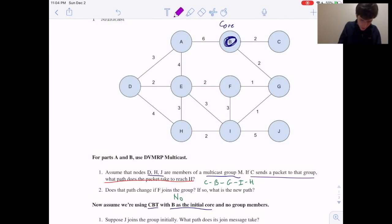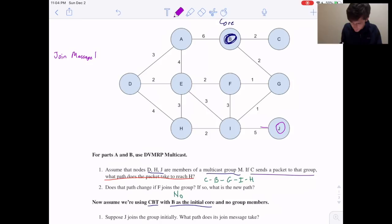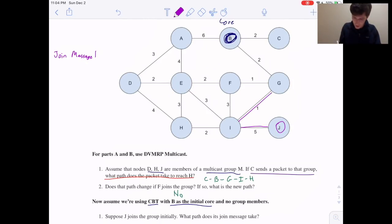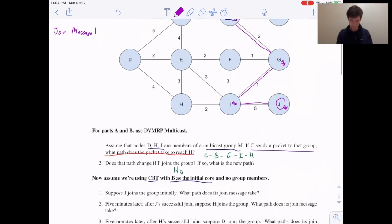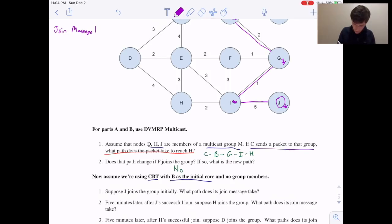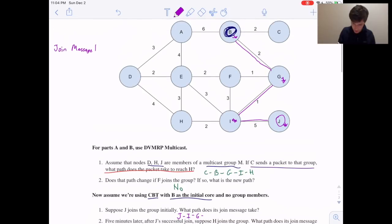So J wants to join the group initially. To join the group, we send a join message to the core. So this first message, join message one. J wants to join. So J sent to I, then that packet goes I to G, and then finally G to B. And every step along the way, G now knows that it's part of this tree, I knows that it's part of this tree, J is obviously part of the tree, and of course the core is part of the tree. Each of these nodes knows the links that are included in the tree. So the message goes J, I, G, B.